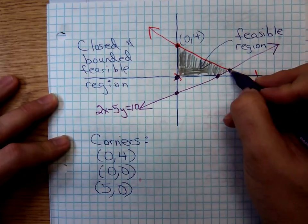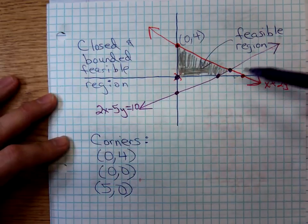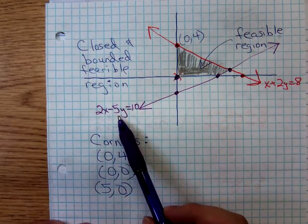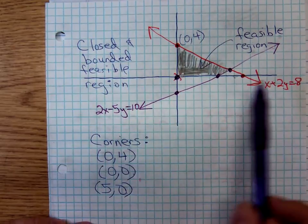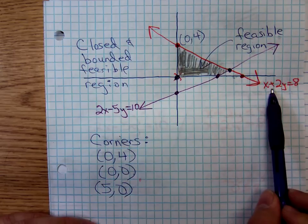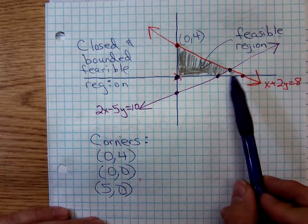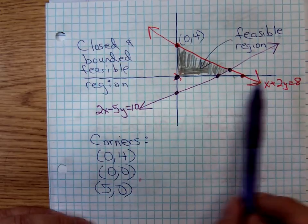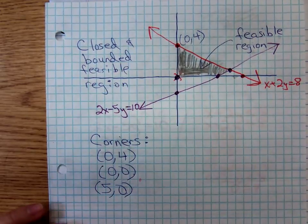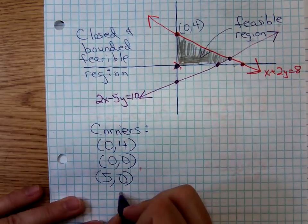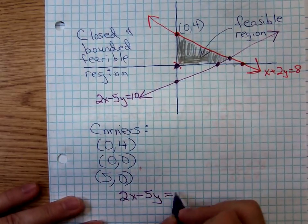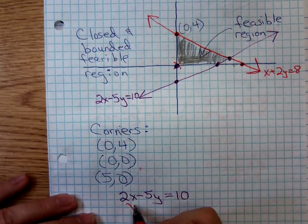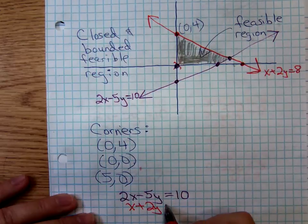And we have one additional corner point right there. It's formed by the intersection of the purple line, 2x minus 5y equals 10, and the red line x plus 2y equals 8. How can we find that point of intersection? We want to know where 2x minus 5y equals 10 intersects x plus 2y equals 8.